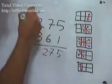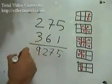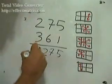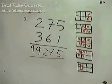12 plus 21 is 33, plus 6 is 39. 2 times 3 is 6, plus 3 is 9. So 99275 is the number we are looking for.